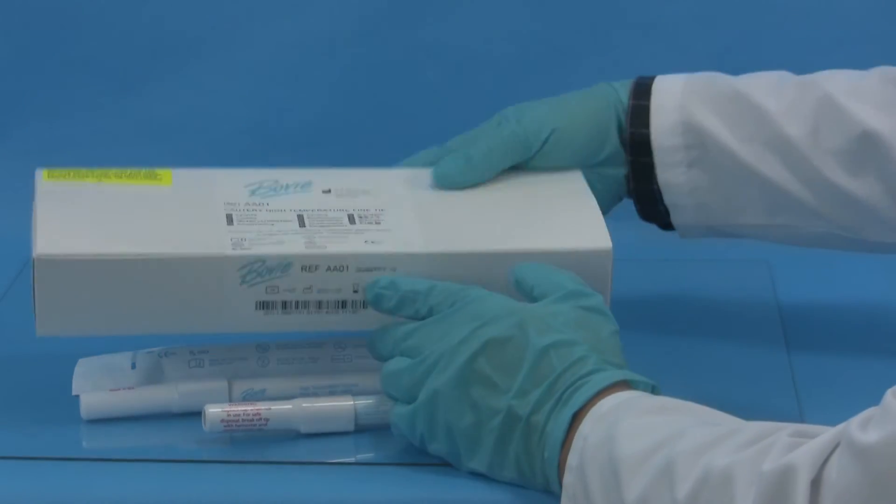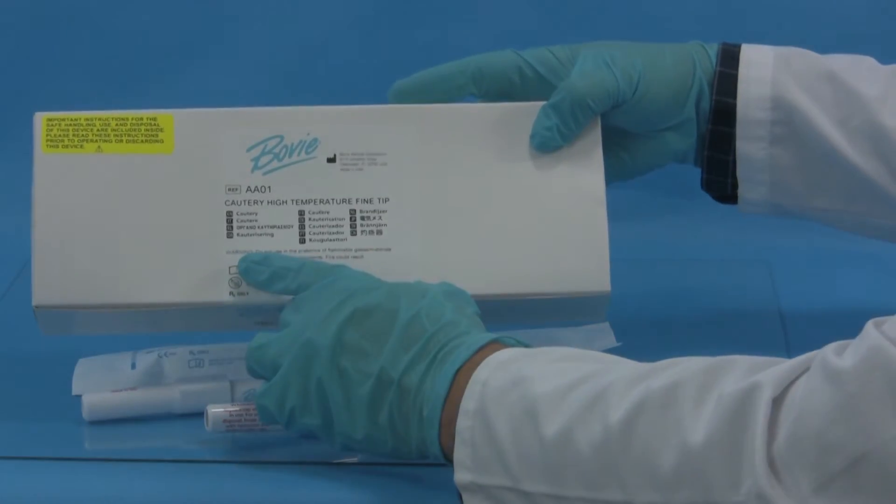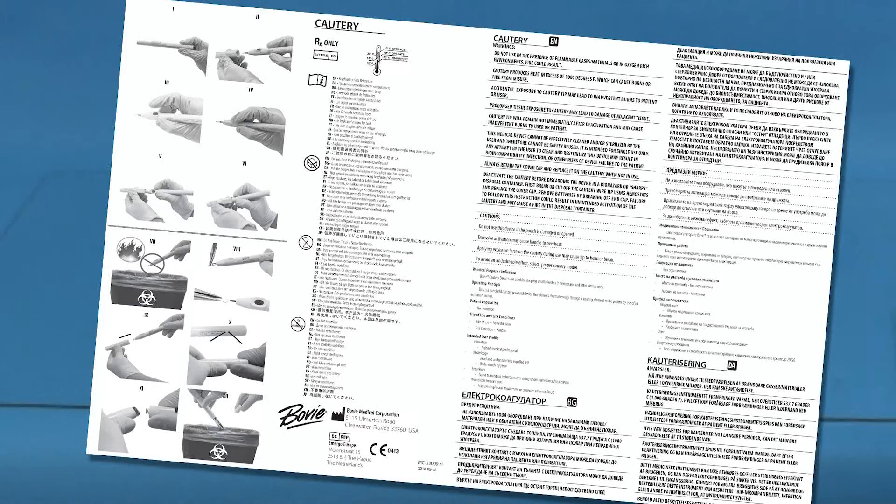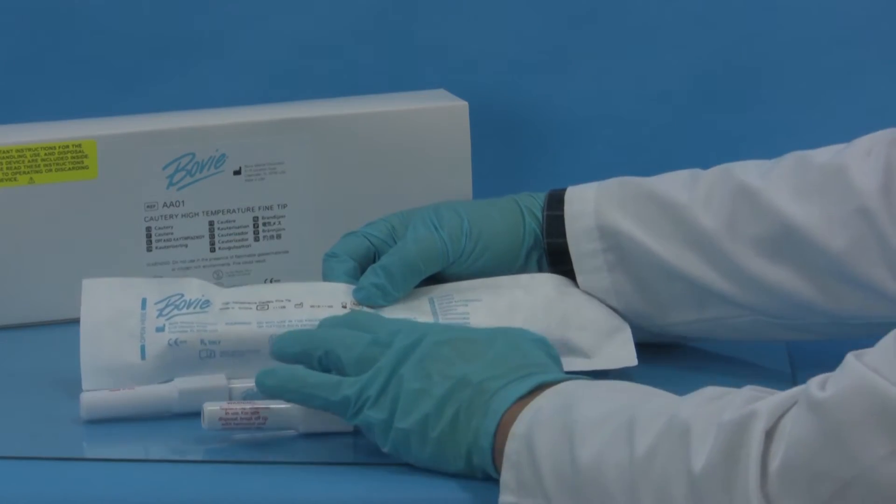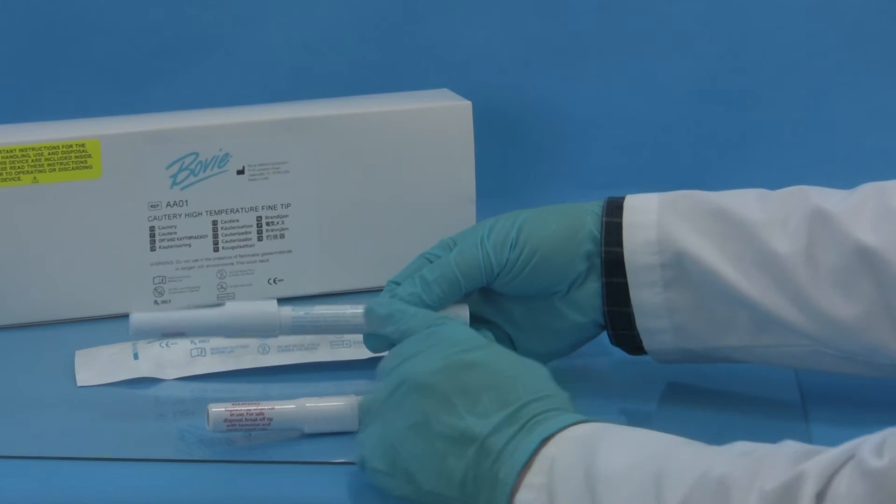For your convenience, cautions and warnings are printed on the box label, instructions for use, peel pouch label, and on the cautery handle.